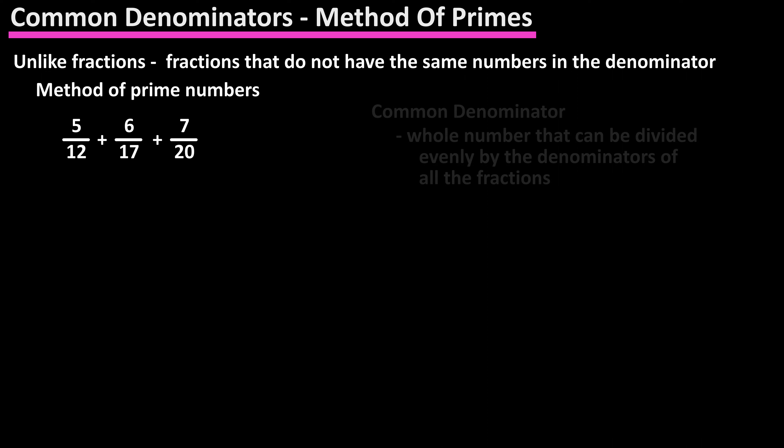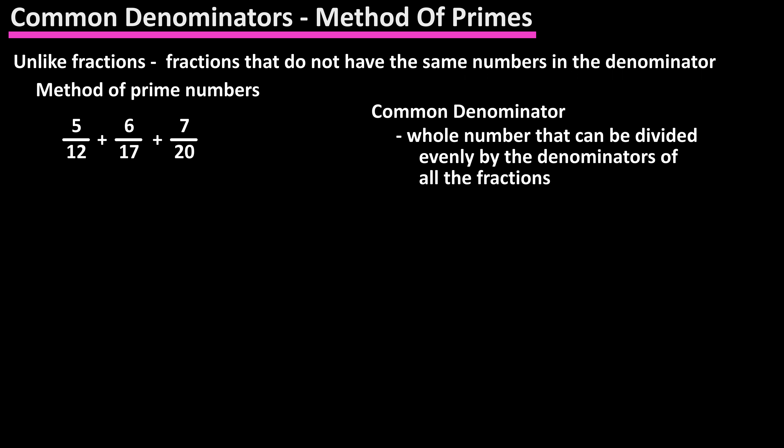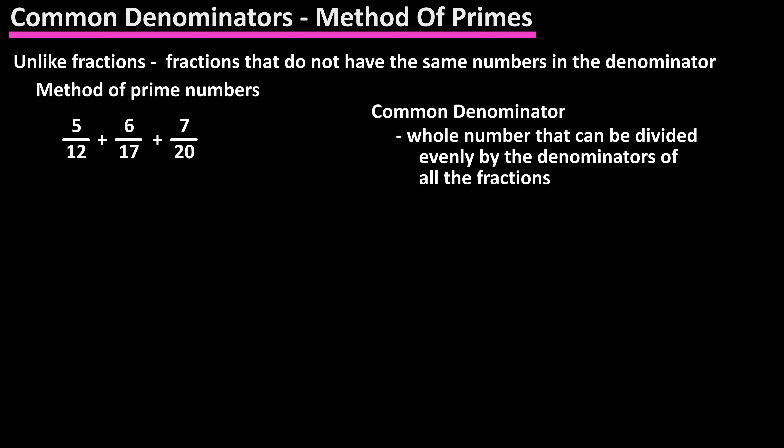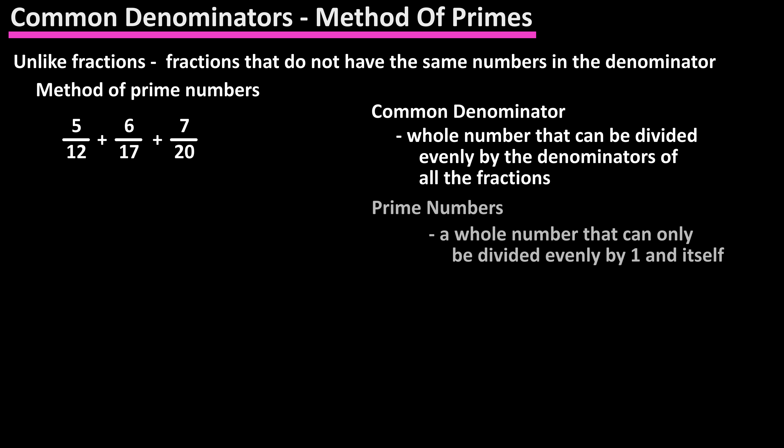A common denominator is a whole number that can be divided evenly — so no remainder — by the denominators of all the fractions. A prime number is a whole number that can only be divided evenly, so no remainder, by one and itself.